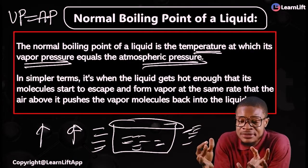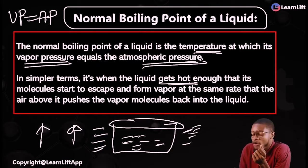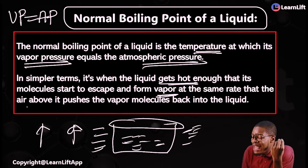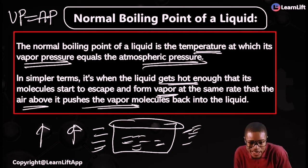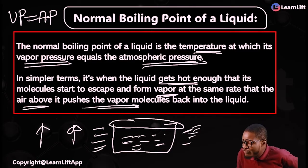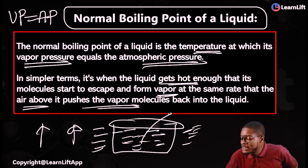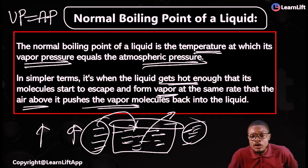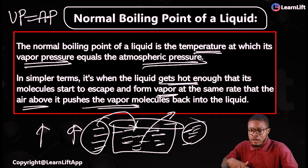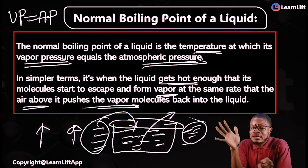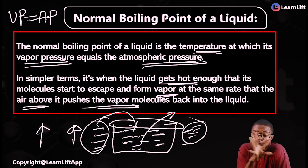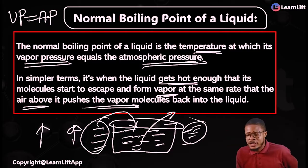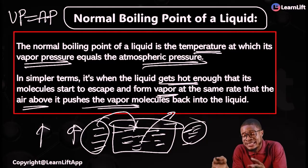In simple terms, when the liquid gets hot enough, molecules start to escape and form vapor. The air above pushes the vapor molecules back into the liquid. As vapor pressure keeps increasing, it eventually equals atmospheric pressure — and that is the normal boiling point of a liquid.